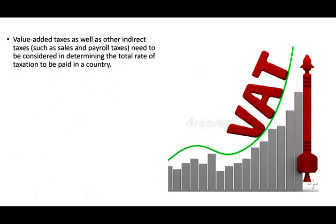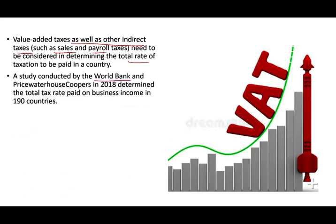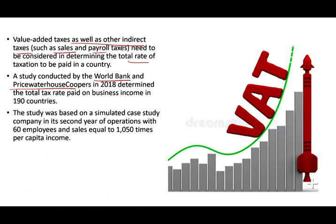Value-added tax, just as well as other indirect taxes such as sales and payroll taxes, need to be considered when figuring out the total tax rate in any particular country, because all these taxes add up. A study conducted by the World Bank and PricewaterhouseCoopers in 2018 determined the total tax paid on businesses in 190 countries, based on a simulated case study company in its second year of operation with 60 employees and sales equal to 1,050 times per capita income.